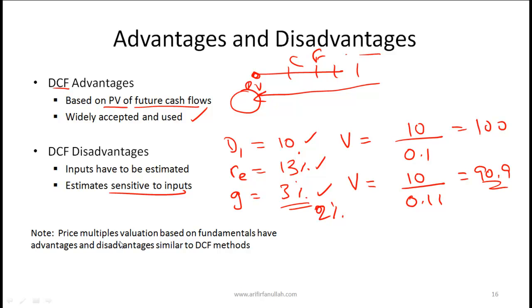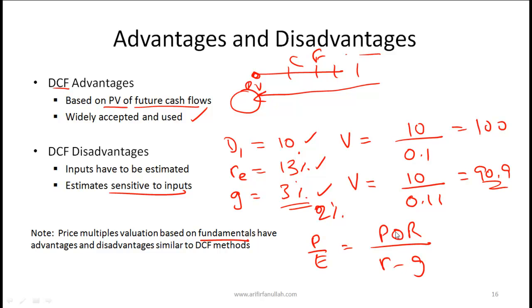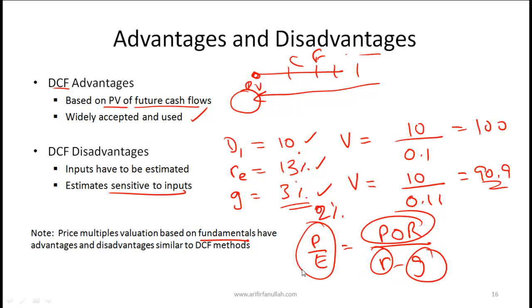In terms of price multiples valuation based on fundamentals, they have the same advantages and disadvantages as the discounted cash flow method, because the PE ratios are calculated based on fundamental values of a company. For example, the PE ratio equals the payout ratio divided by R minus G, so we need to estimate the payout ratio, the cost of equity, and the growth rate — and hence the value of PE will be sensitive to the assumptions we make.